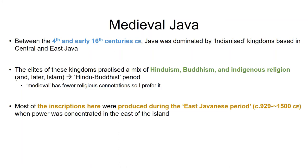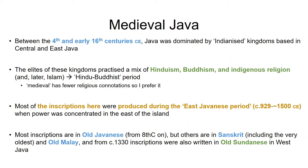Most of the inscriptions I'm going to show you were produced during the East Javanese period — between 929 and about 1500. Most inscriptions are in Old Javanese, which begins in about the 8th century. The ones before that are mostly in Sanskrit, the very oldest inscriptions, and also Old Malay. From about 1330 there are also some inscriptions in Old Sundanese, the language of West Java.